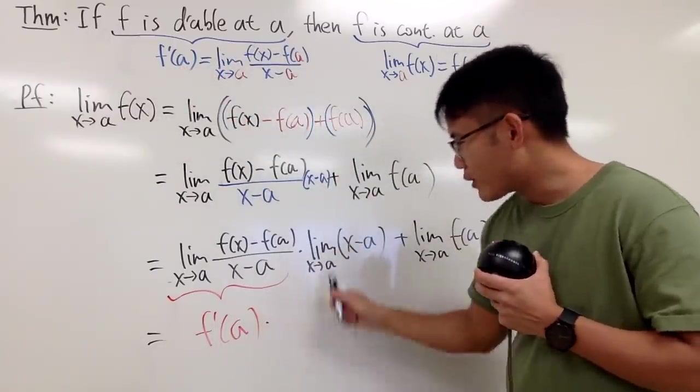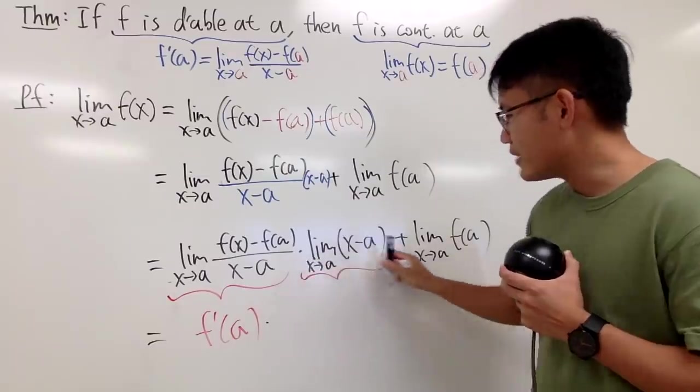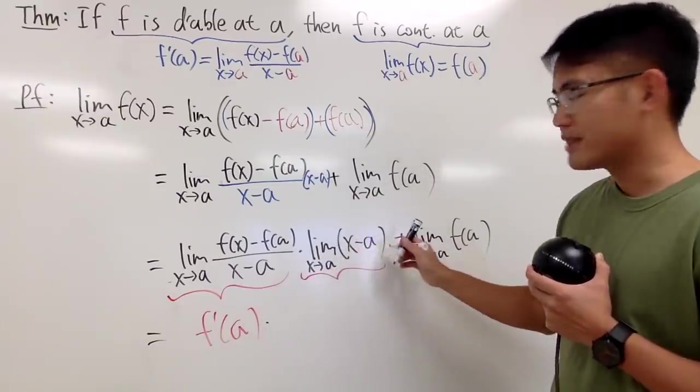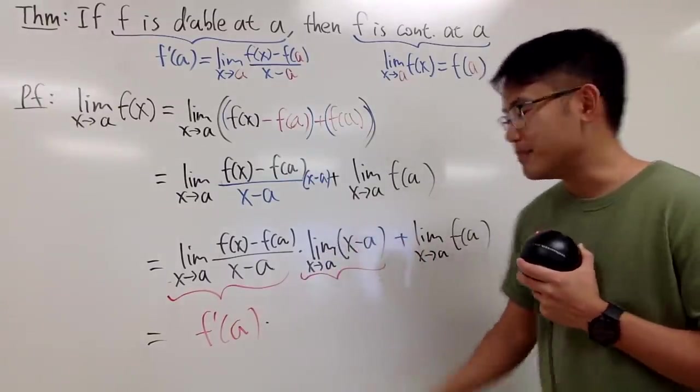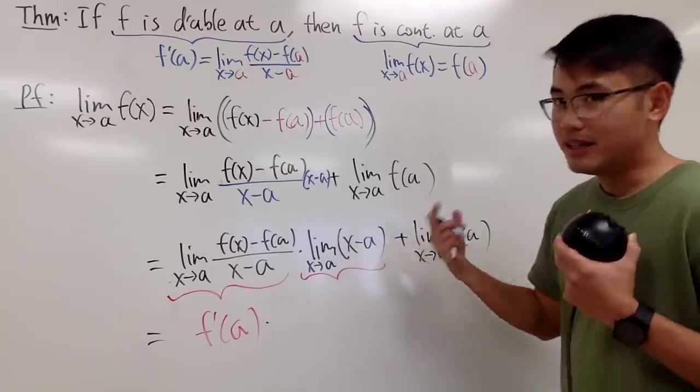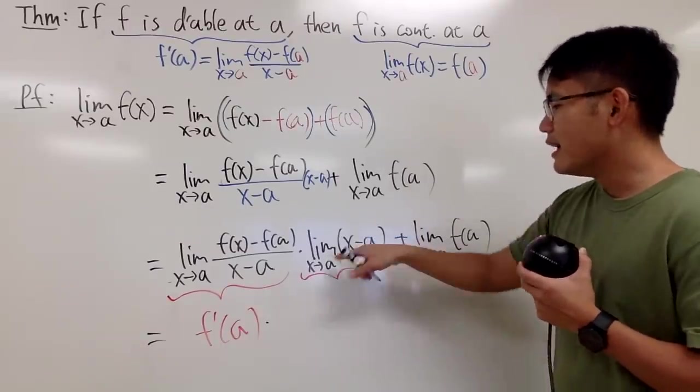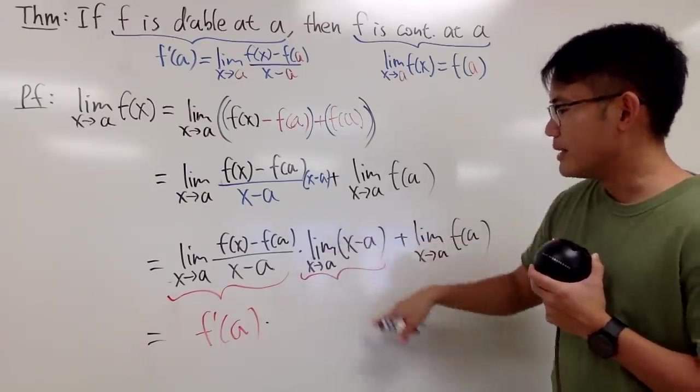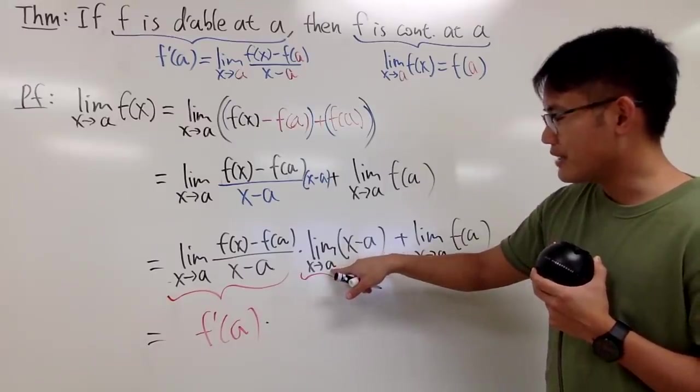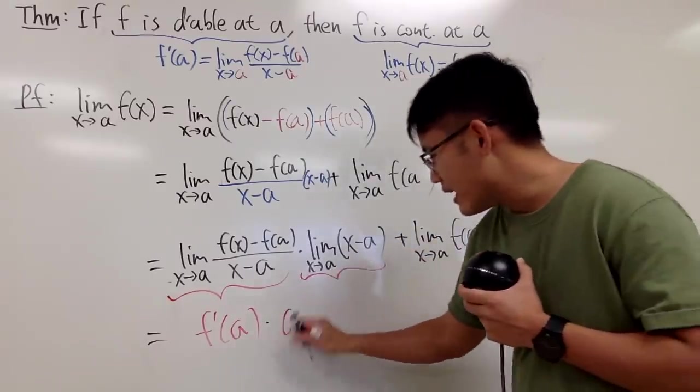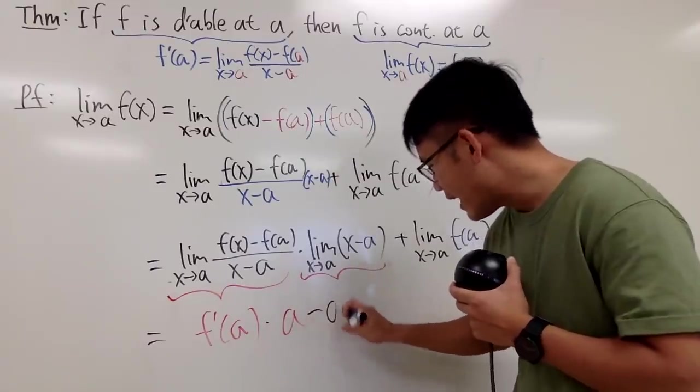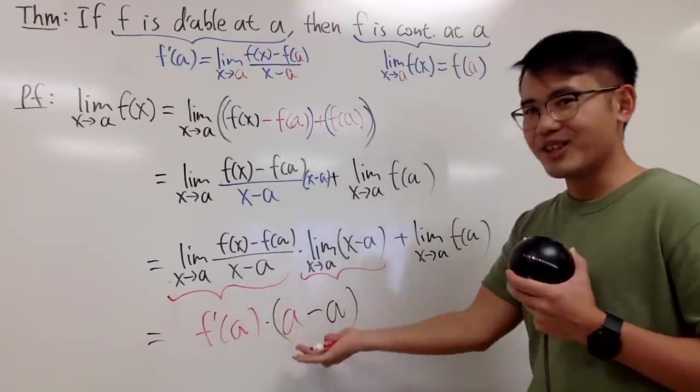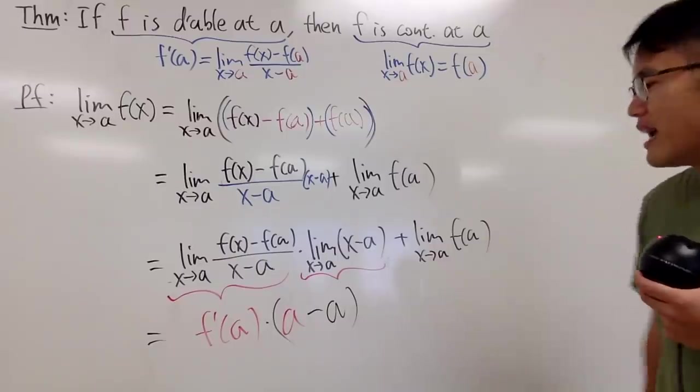And the second part right here is that we have the limit as x approaching a, x minus a. This is just as nice, because x minus a is linear, so it's continuous. In other words, to calculate this limit, you can just legitimately plug in a into x. So, we get a minus a, and of course, this is going to be zero, because thanks to a minus a.